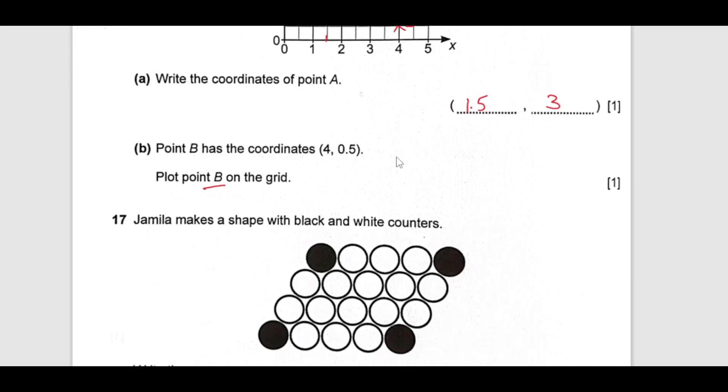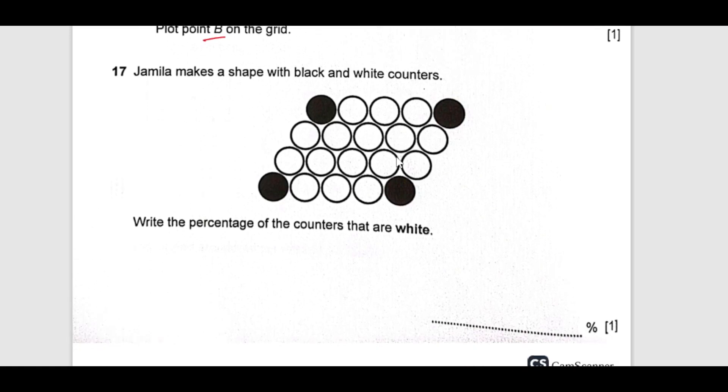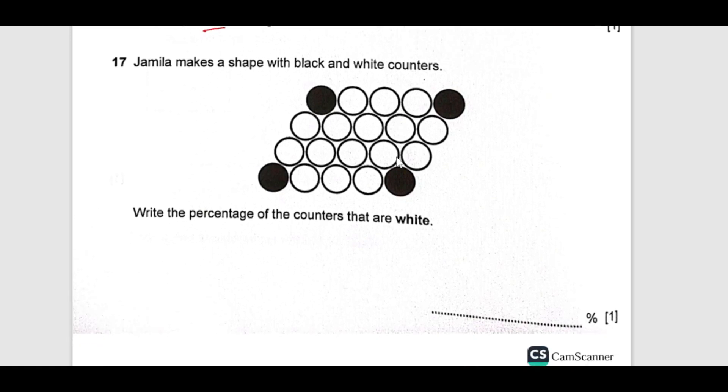Now, number 17, Jamila makes a shape with black and white counters, write the percentage of the counter that are white. If you see here we have like this way, 1, 2, 3, 4, 5 and this way we have 4. So, total is 20. Out of 20, 20 minus 4 are black, they are 16. We have 16 white counters out of 20 and how many will be out of 100, that will be the percentage. 20 times 5, 16 times 5, it is 80 percent.